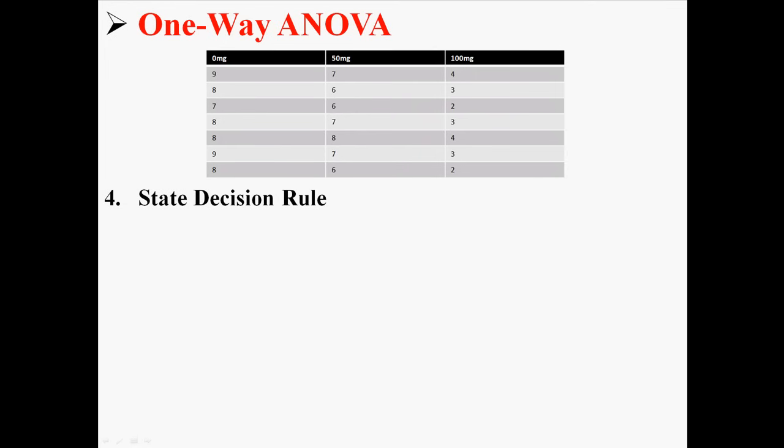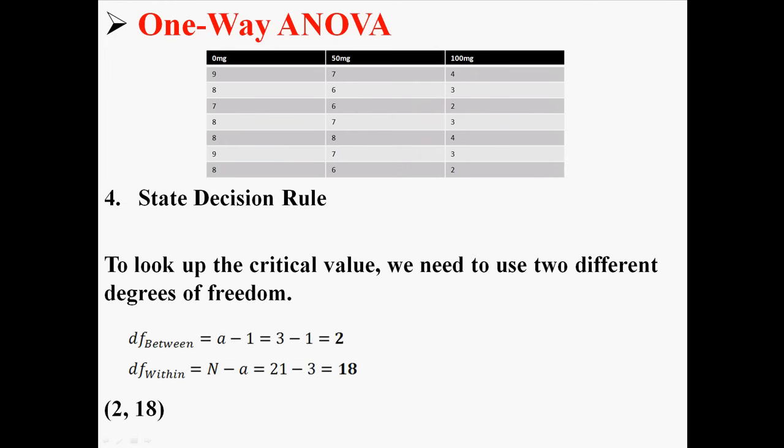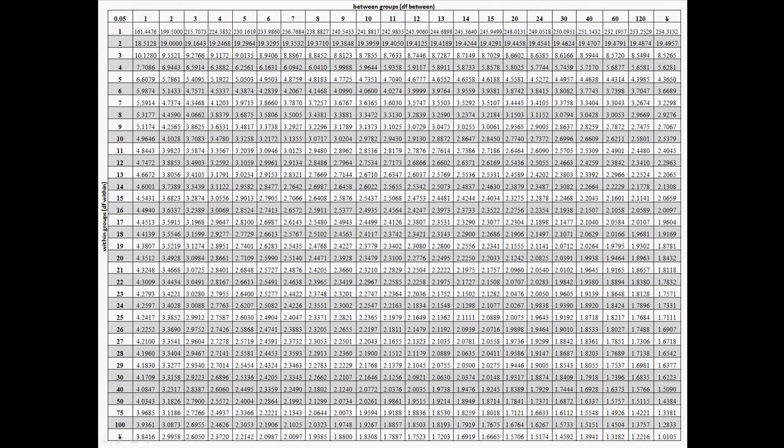Next we will state our decision rule. To look up the critical value we need, we need to use two different degrees of freedom: degrees of freedom between and degrees of freedom within. We're going to use this f table, which looks very complicated. Hopefully you're watching this on high definition so you can actually read what these numbers are. This is the smallest f table I could get into this lecture.